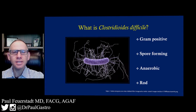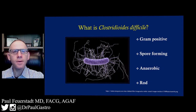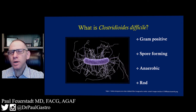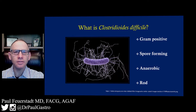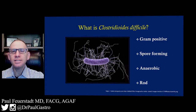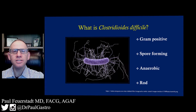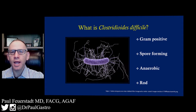So what is C. difficile? C. difficile is a gram-positive, spore-forming, anaerobic rod. As a patient, what do these terms actually mean? Gram-positive is a term used for the gram stain, a stain that is used in the pathology lab to identify and differentiate different types of bacteria. C. difficile stains positively for the gram stain.